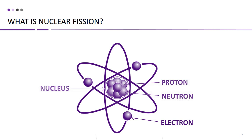Neutrons are neutral particles found in the nucleus of an atom. They do not have any charge, and their main role is to add stability to the nucleus. Neutrons help to keep the protons in the nucleus together, as protons being positively charged would naturally repel each other. The number of neutrons in the nucleus can vary, and atoms of the same element with different numbers of neutrons are called isotopes.